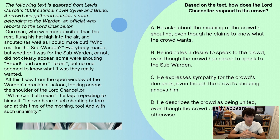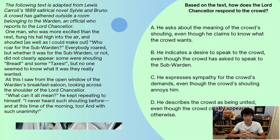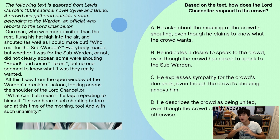All this I saw from the open window of the warden's breakfast saloon, looking across the shoulder of the Lord Chancellor. 'What can it all mean?' he kept repeating to himself. 'I never heard such shouting before, and at this time of the morning too, and with such unanimity.' Based on the text, how does the Lord Chancellor respond to the crowd?